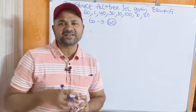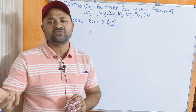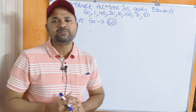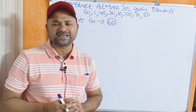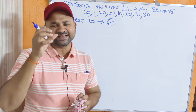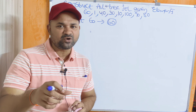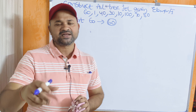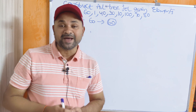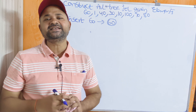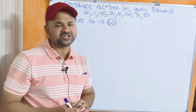The balance factor formula is: height of left subtree minus height of right subtree. If the balance factor of a node is -1, 0, or +1, then we can say it is balanced. Whereas if the balance factor is other than -1, 0, or +1, then we say it is unbalanced. If the tree is unbalanced, then we have to perform the corresponding rotation on the tree.